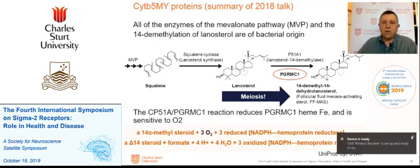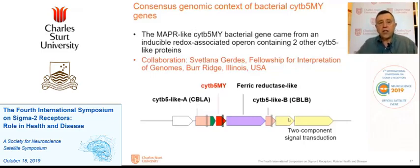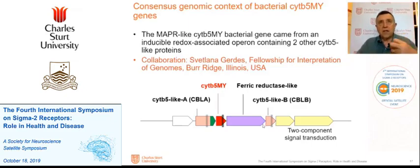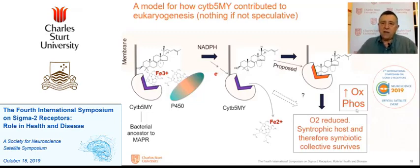The reaction of cytochrome P51 and PGRMC1 is interesting because it involves oxygen. You can imagine that when oxygen is around, this sterol is produced and does something to save the cells from dying of oxygen stress. The genomic context of bacteria with this cytochrome P5 and MAPR-type protein is an inducible redox-sensitive system — induced in the presence of oxygen. A working model is that cytochrome P450 and the MAPR protein make lanosterol, PGRMC1 loses its heme, the sterol then binds to PGRMC1, and somehow that increases mitochondrial activity and reduces oxygen levels so the host can survive.